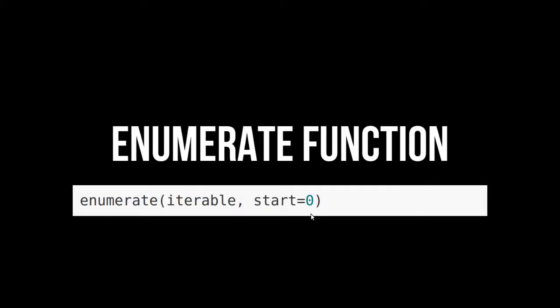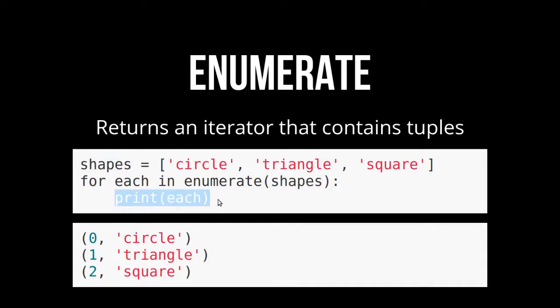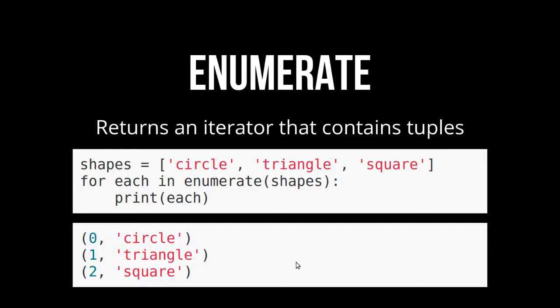Or you could use the enumerate function. This is the enumerate function — that's the way it works: it takes an iterable, and then there's an optional start. It returns an iterator that contains tuples. We'll take that same list and throw it into enumerate, and print out each one. So that's going to be tuples: zero, circle; one, triangle. Kind of what you would expect.